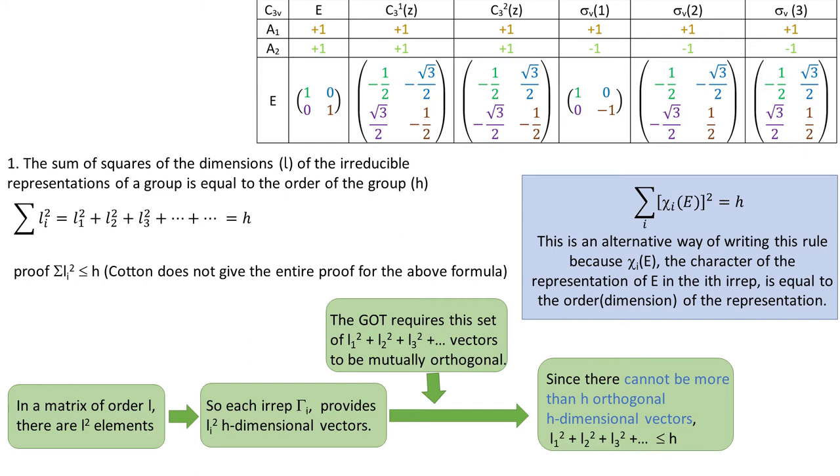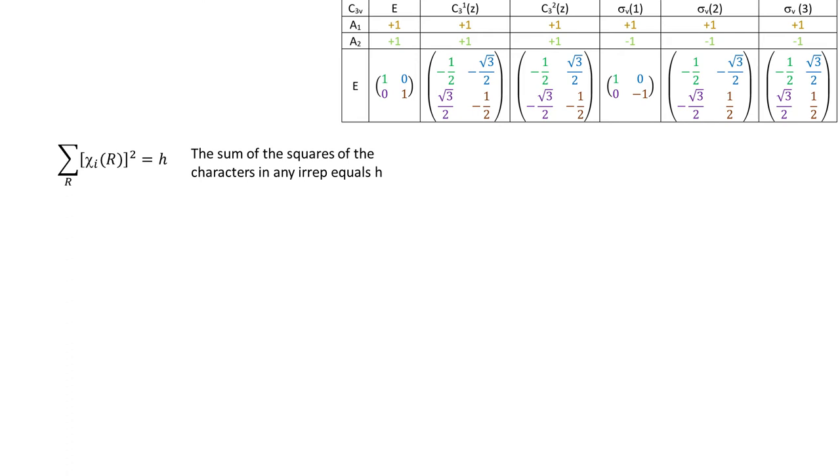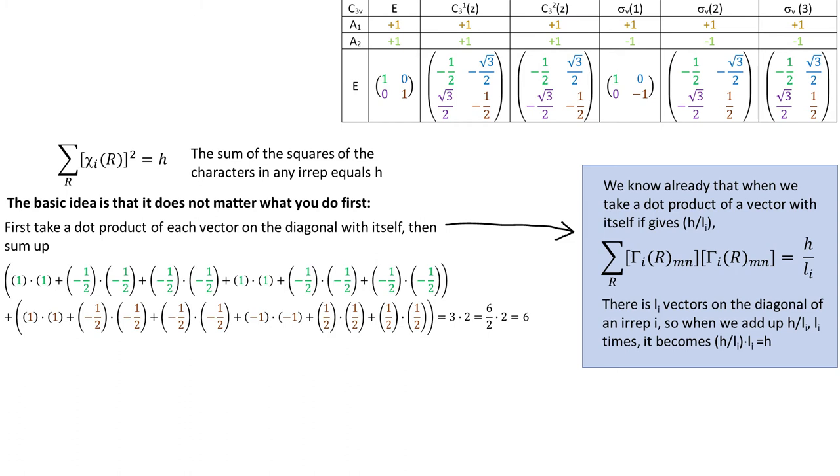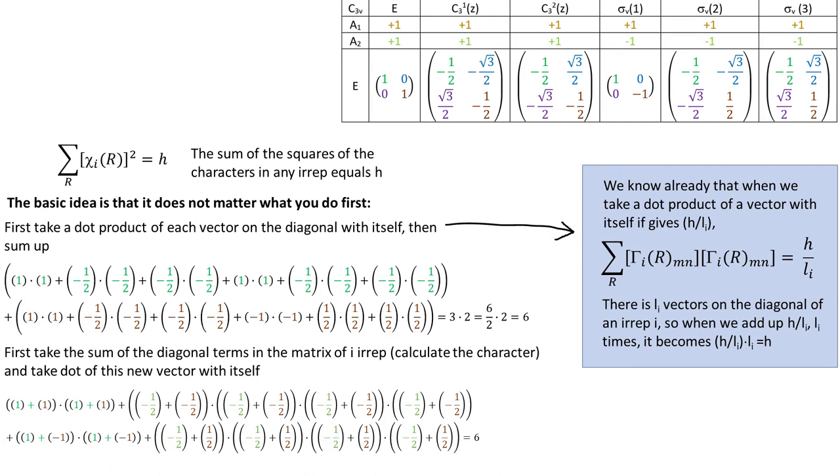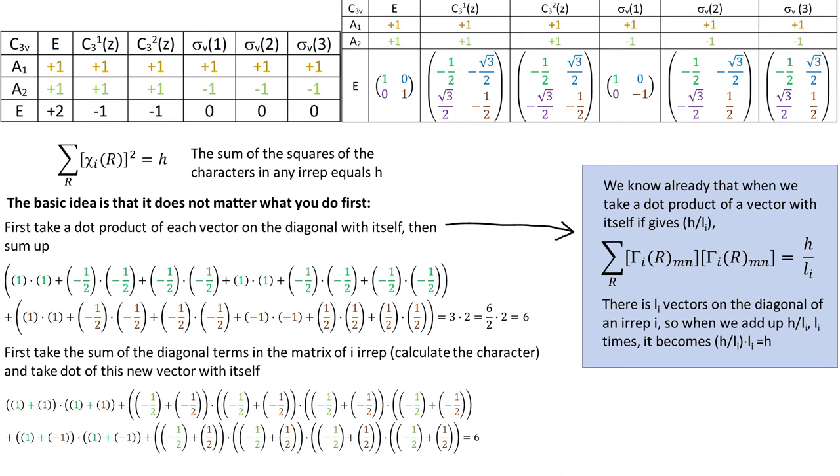Rule number two. The sum of squares of the characters in any EREP equals H. The basic idea is that it doesn't matter what we do first. Take a dot product of each vector on the diagonal with itself and then sum up and we already know that it will add up to H. Or first take the sum of the diagonal terms in the matrix of an EREP and dot this new vector with itself. To get from here to here we just need to multiply out the numbers. So now we see that the black vector in the character table is orthogonal to all the other vectors in the table as well.